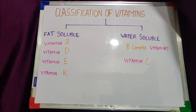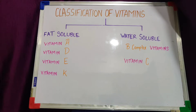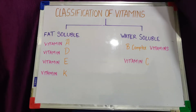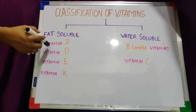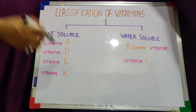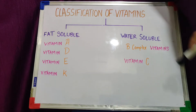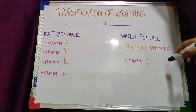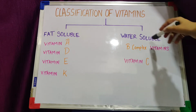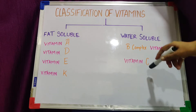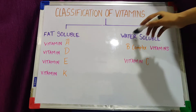Coming to the classification of vitamins — vitamins are classified on the basis of their solubility, that is, the substance in which the vitamin gets dissolved. Vitamins that are soluble in fat are called fat-soluble vitamins, and this class includes vitamins A, D, E, and K. Water-soluble vitamins include the B complex vitamins and vitamin C.